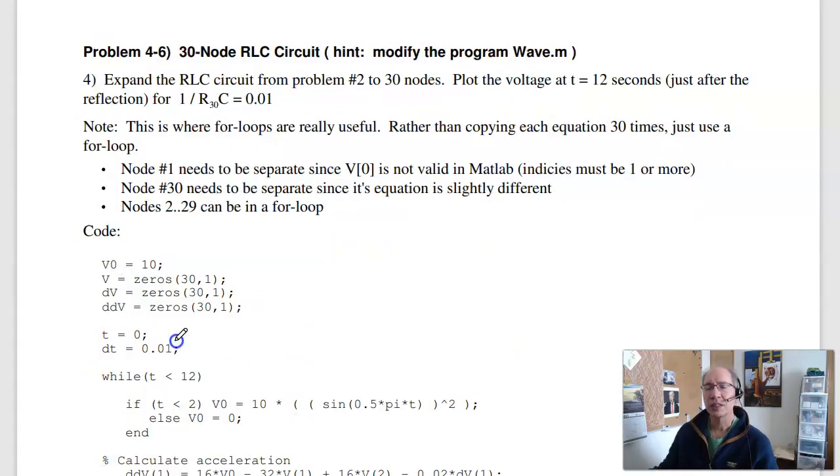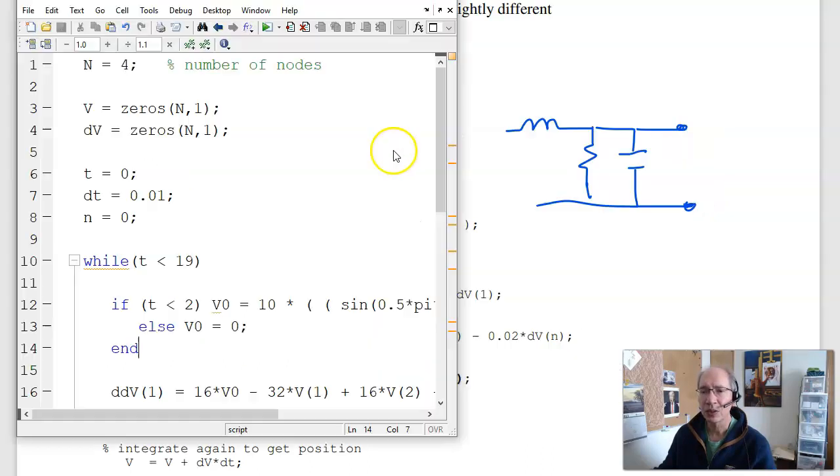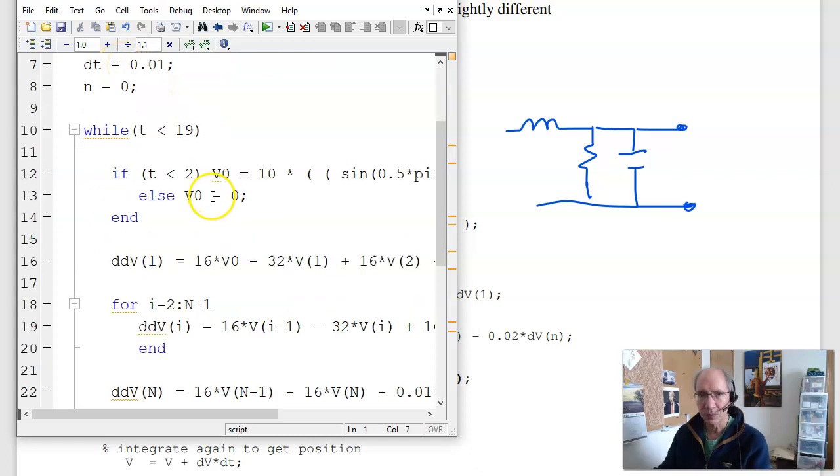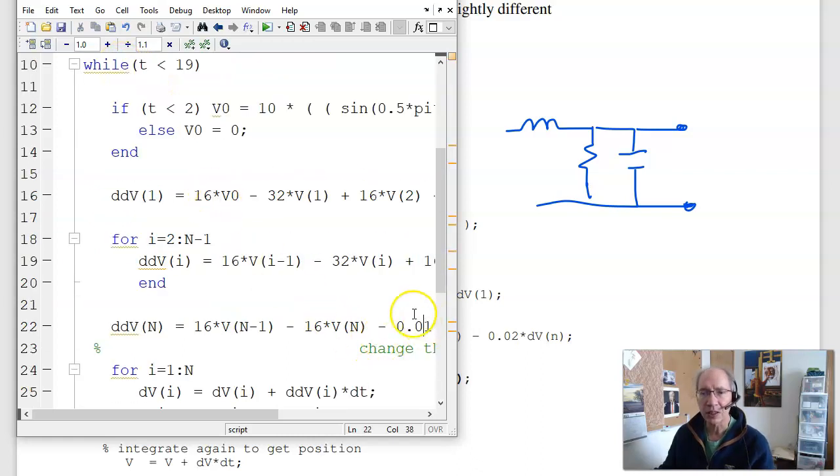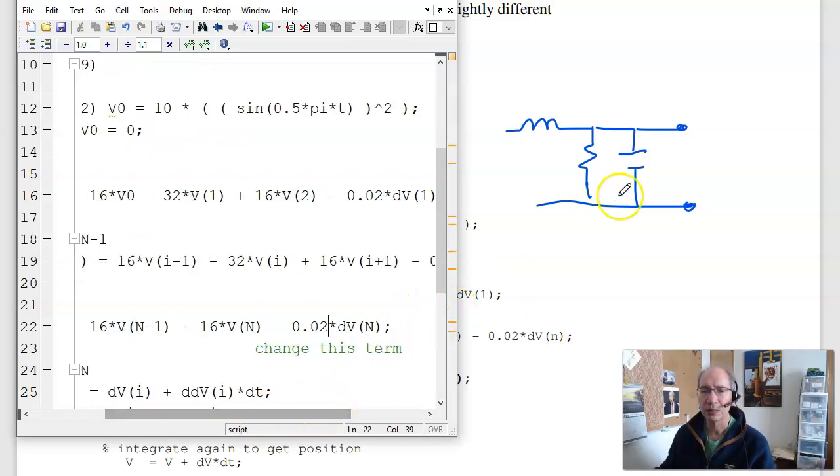Problem 4 says, now increase that to 30 nodes. And see what happens. At the last node, this guy right here, I've got my circuit with a resistor capacitor at the last node. And I'm going to terminate it with a resistance. If I leave that open, that last node stays unchanged. So let's do that. Let's go over here, increase this to 30 nodes. The last node is just 0.02. I haven't added anything to the last node.